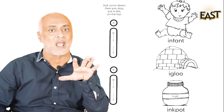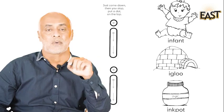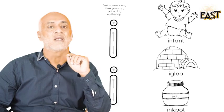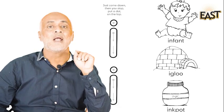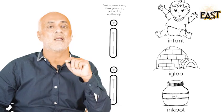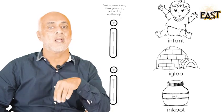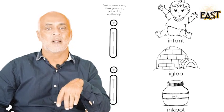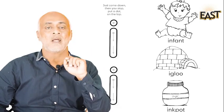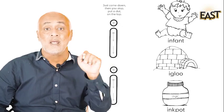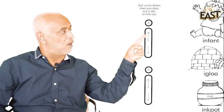Did you know? All these words have the same beginning sound — igloo, infant, ink pot. The beginning sound is 'ee.' Let's say together: ee, ee. Ee — infant, ee — igloo, ee — ink pot. And this is what 'ee' looks like. Look, it has a dot on the top. This is 'ee.'